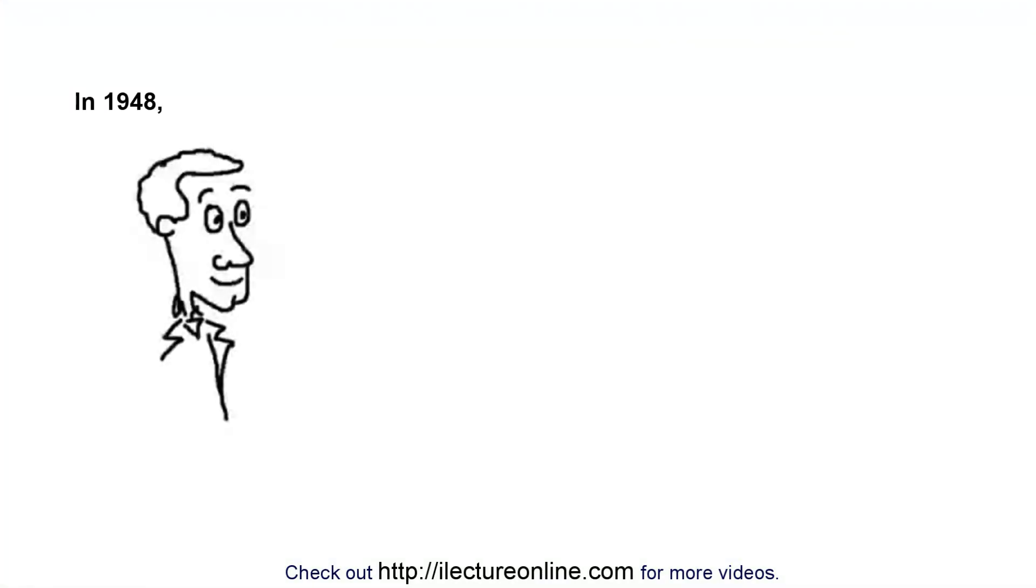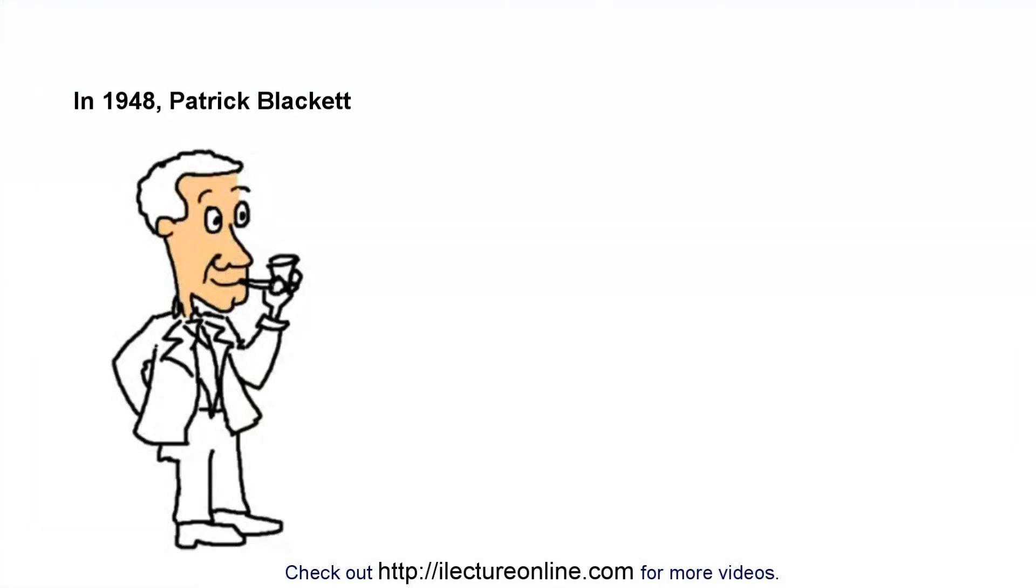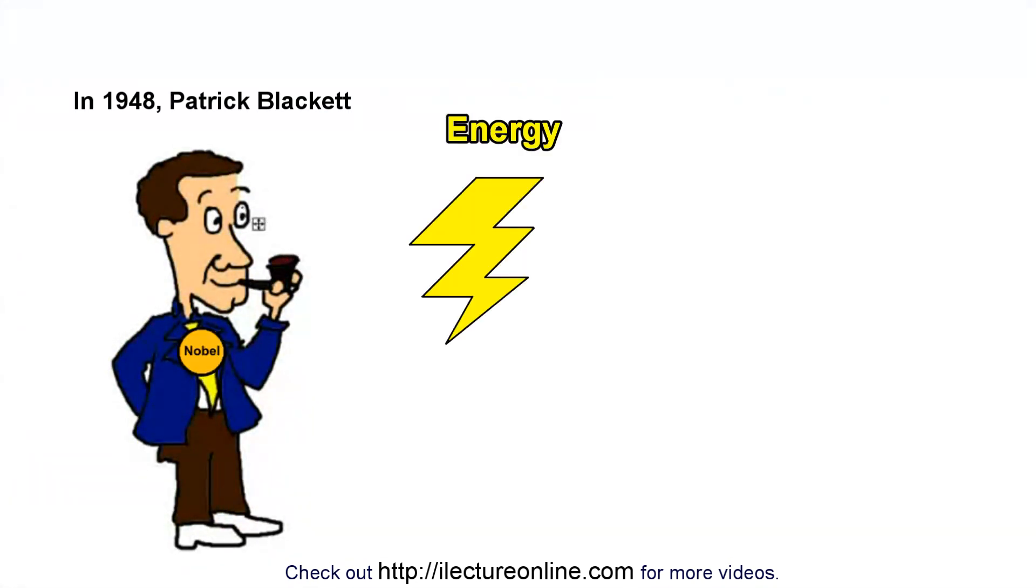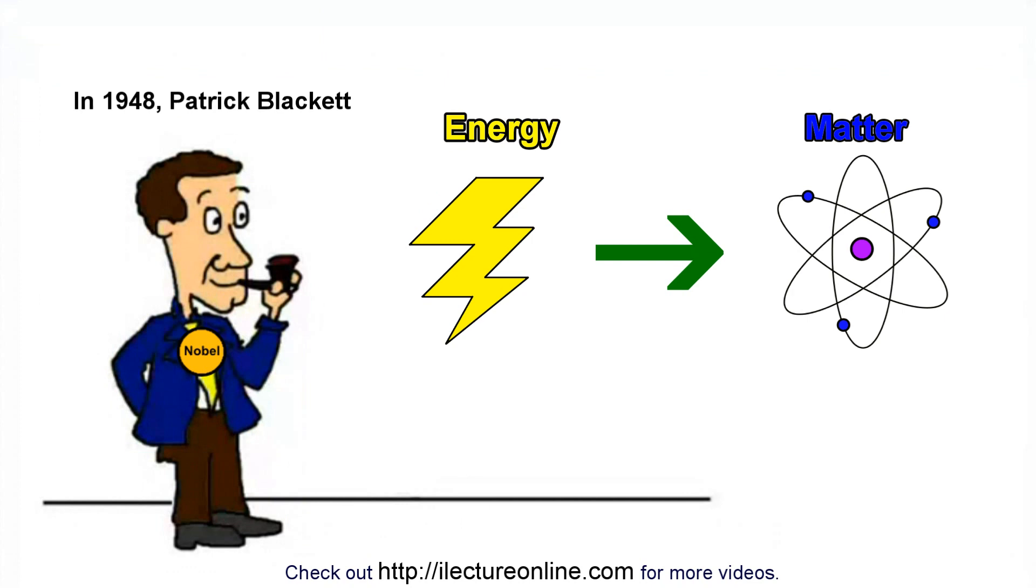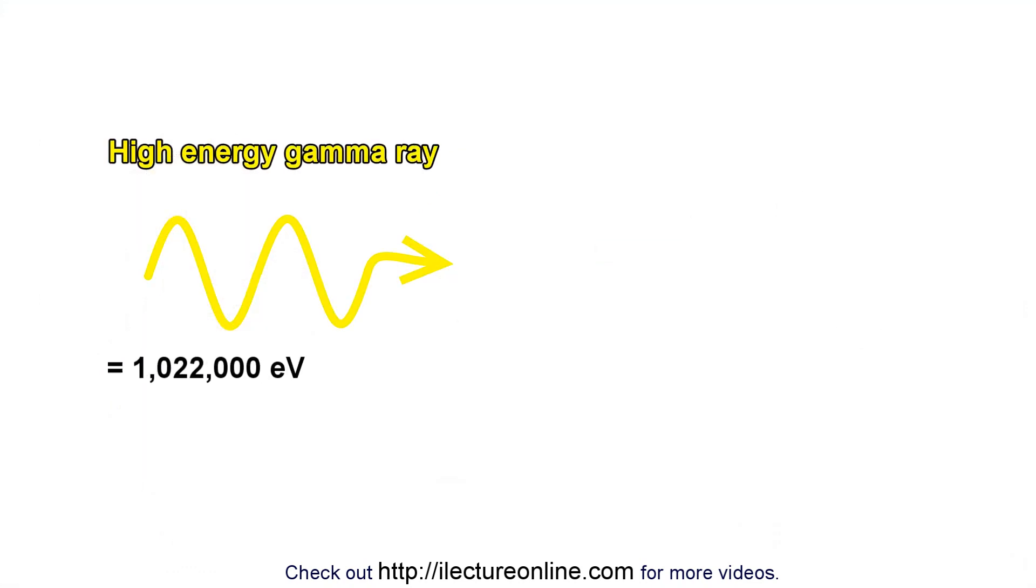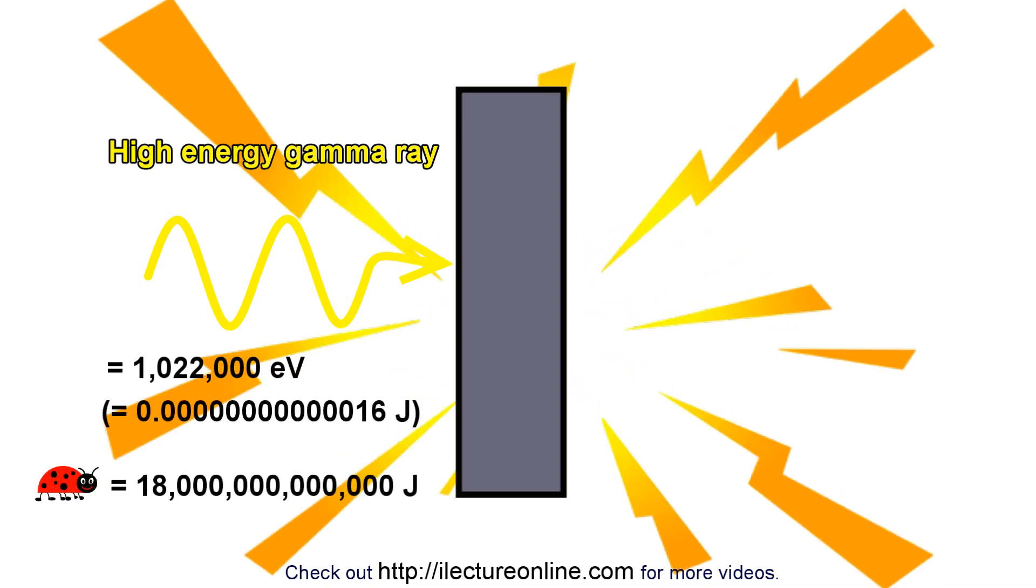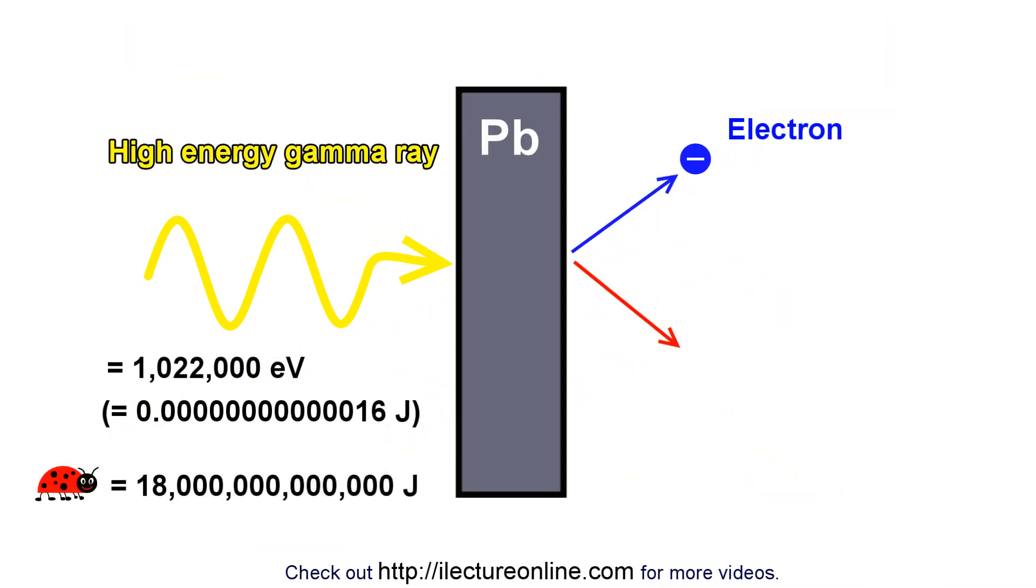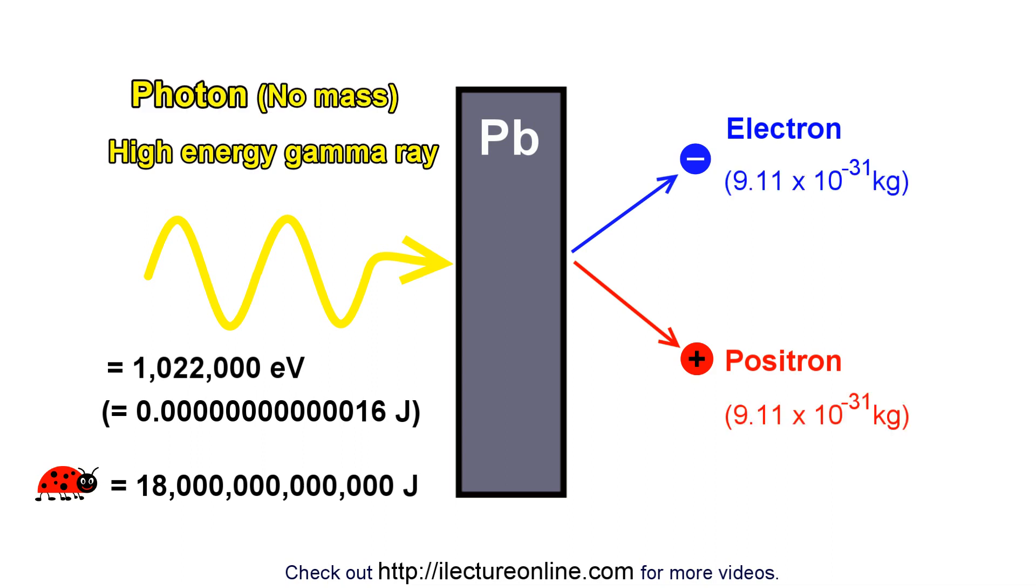In 1948, Patrick Blanket did an experiment that earned him the Nobel Prize, in which he showed that you could take energy and turn it into matter. It took high-energy gamma-ray photons of at least 1.022 million electron volts and slammed them into a lead barrier, and an electron and a positron were created. It turned a photon that has no mass into two particles that have mass.